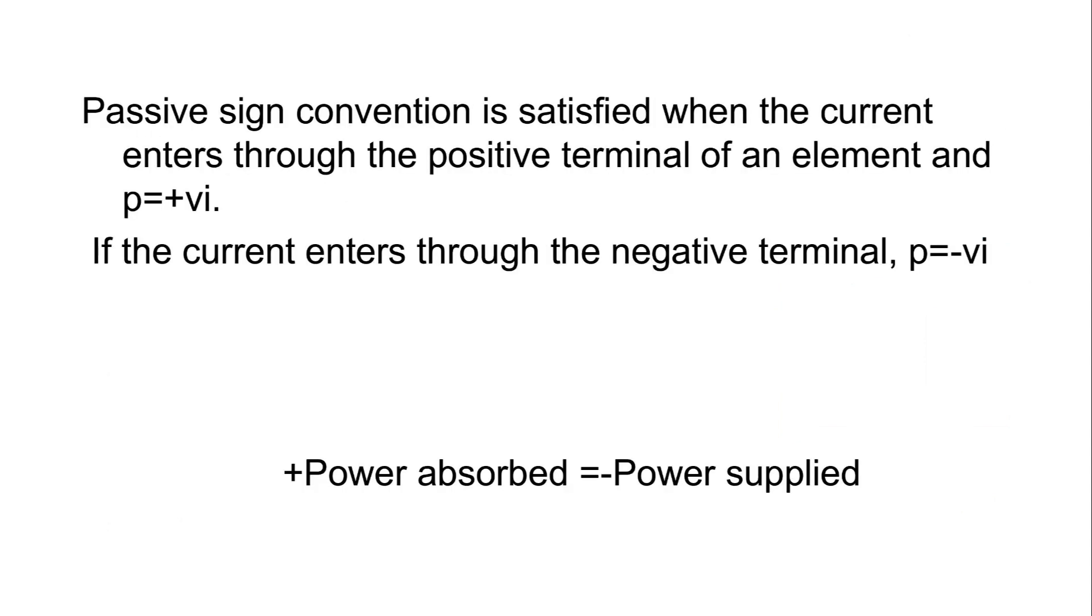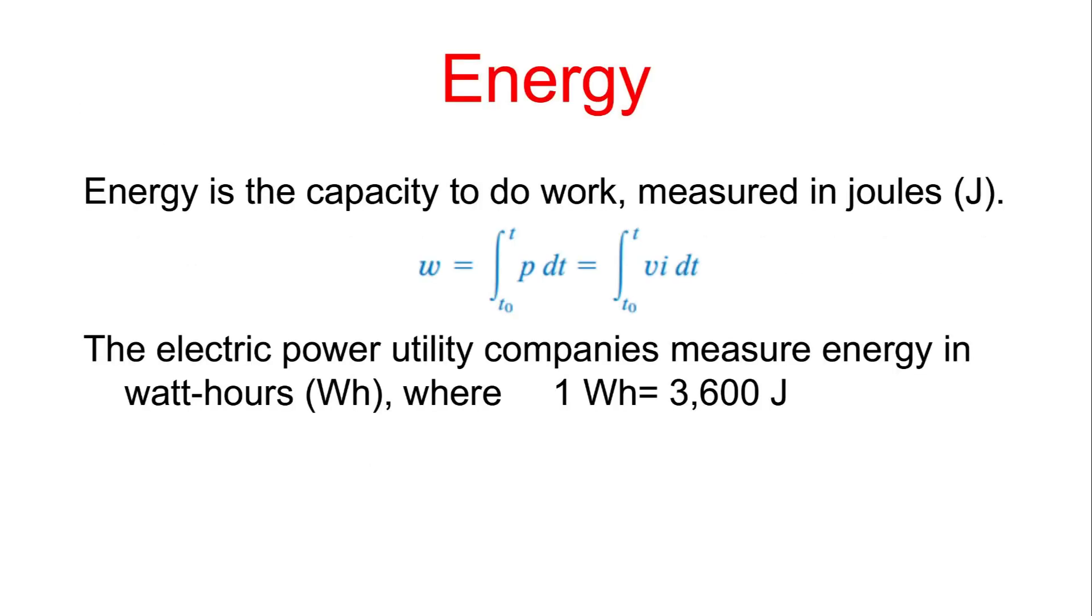Passive sign convention is satisfied when the current enters through the positive terminal of an element, P equals plus VI. If the current enters through the negative terminal, P equals minus VI.